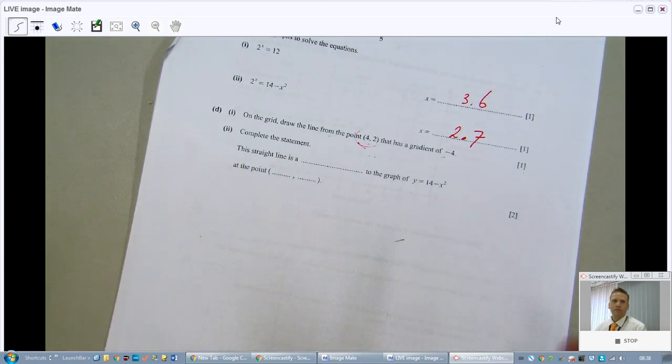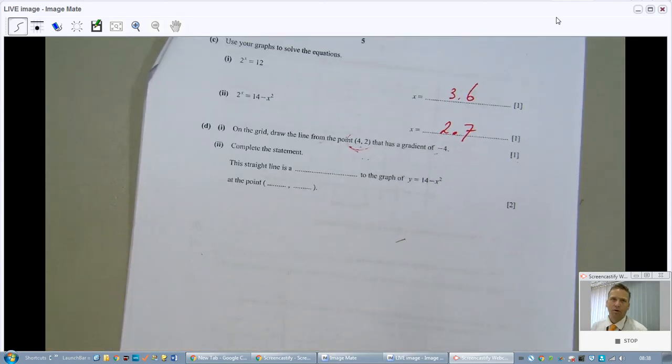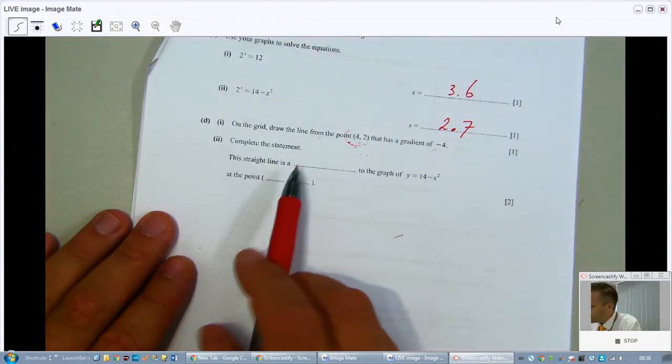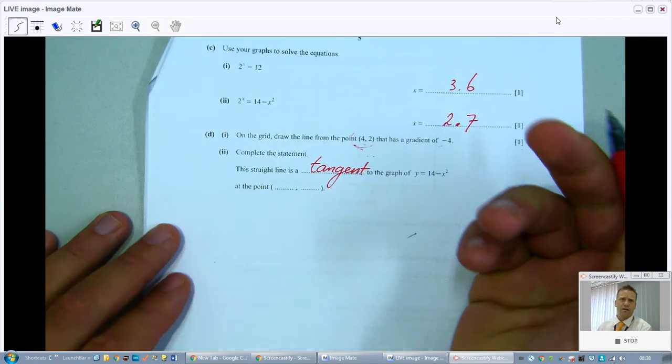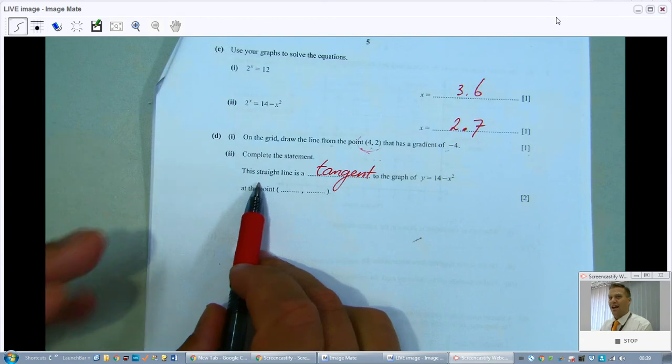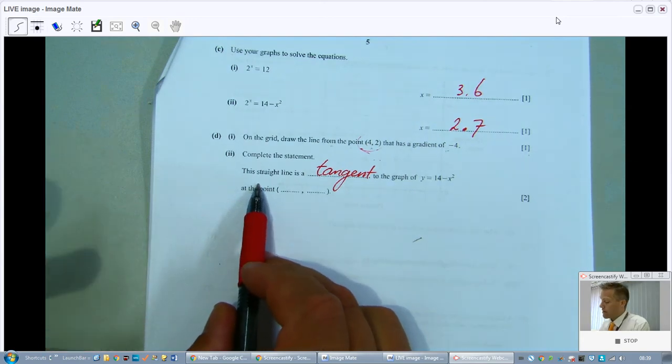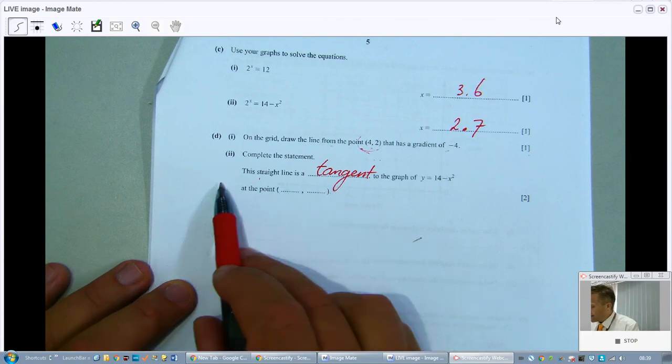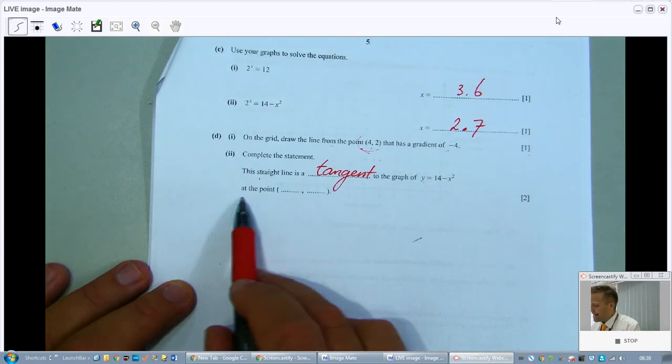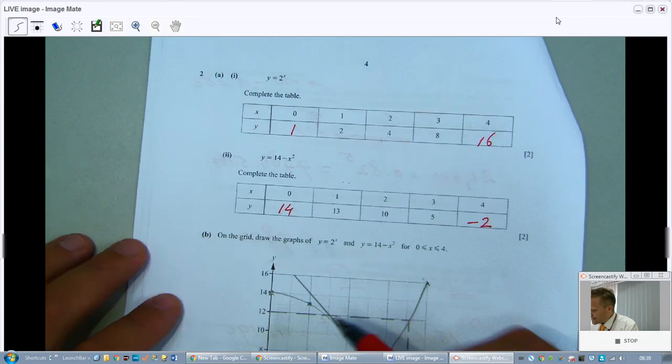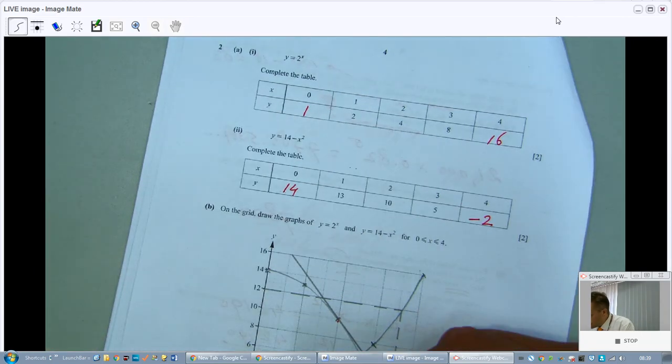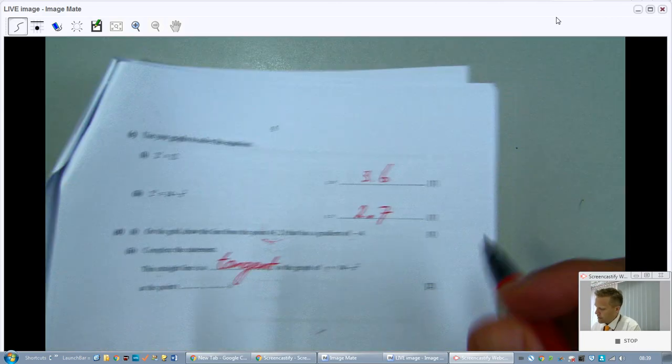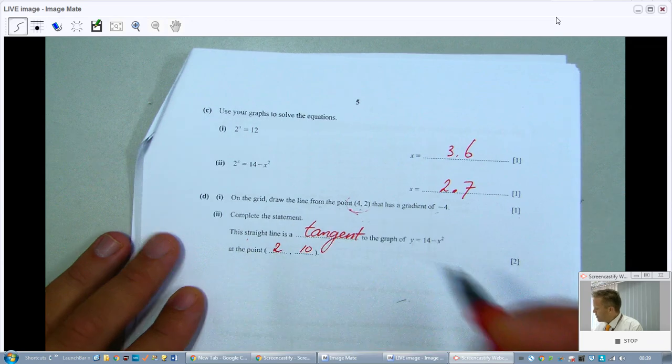Complete the statement. Well, as if I have a magic ball where I can predict the future with. Because, it says the straight line is a tangent. By the way, all lines are straight, aren't they? I never understand why they say the straight line. Isn't every line straight? Ask your teacher and tell me the answer. The straight line is a tangent to the graph of, that is the parabola, at the point. Now, you see a tangent. It's a touch line. Just touching it at the point 2, 10. 2, 10. Beautiful.